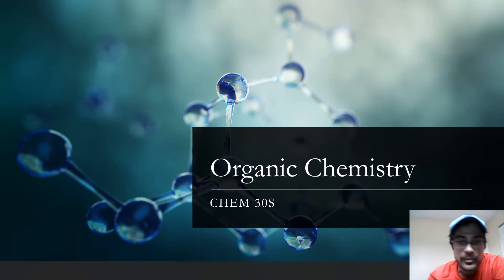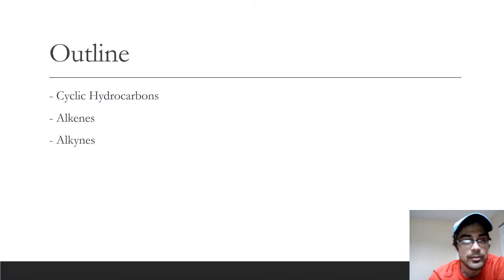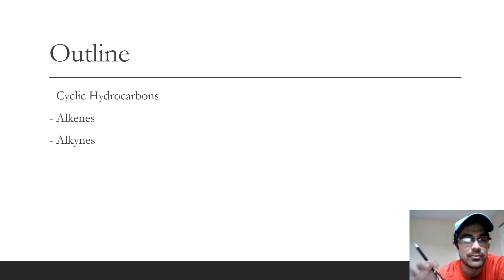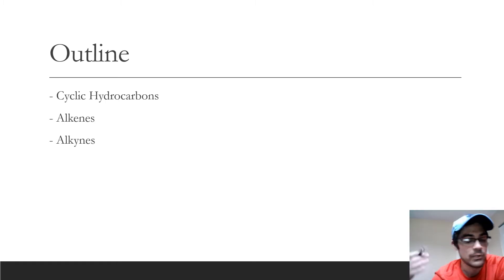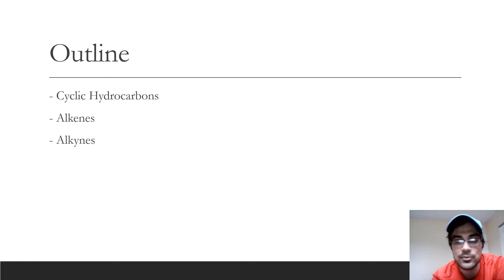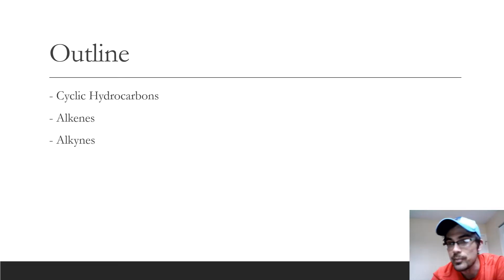What's up guys? For this video I'm going to be talking more about organic chemistry — specifically cyclic hydrocarbons, alkenes, and alkynes. This correlates with the organic chemistry 3 notes I posted on Teams, so feel free to follow along. I did skip the first bit on line structures since that's pretty straightforward and covered in the Zoom classes. So I want to start with the cyclic hydrocarbons. If you have questions, feel free to send me a message.